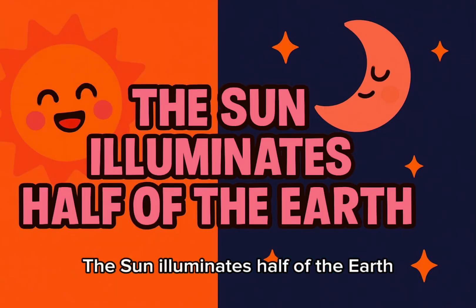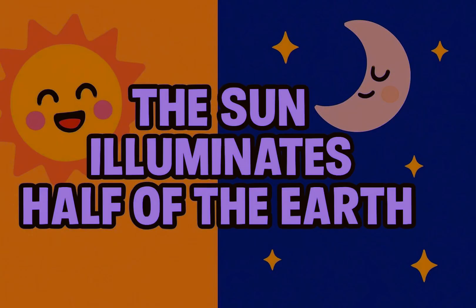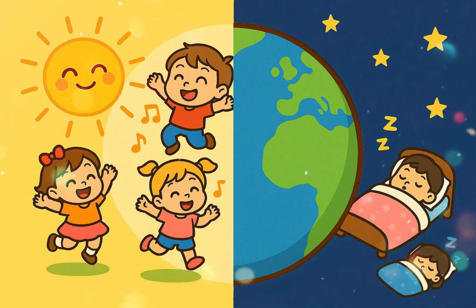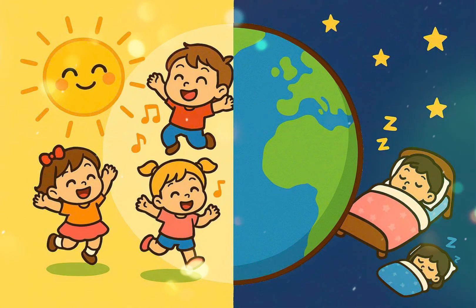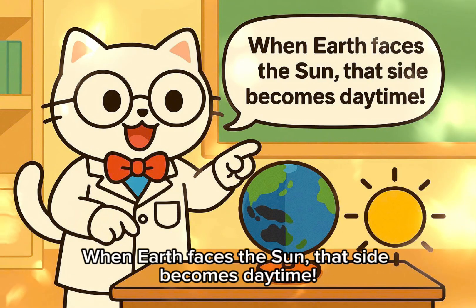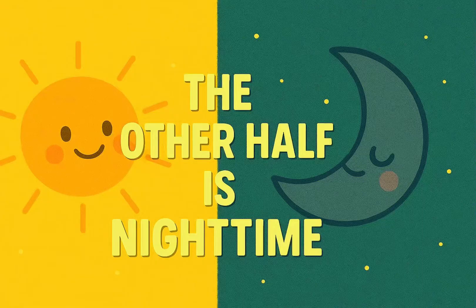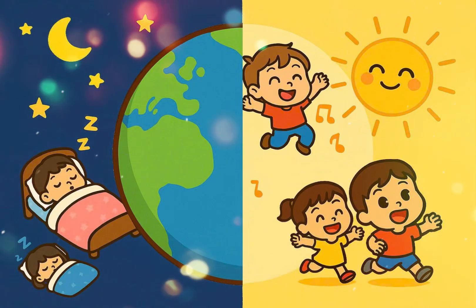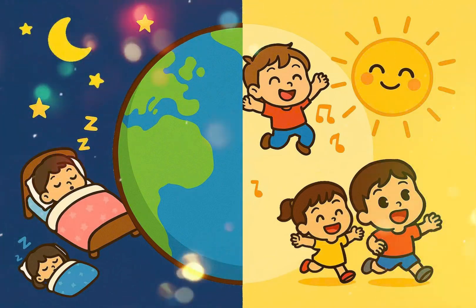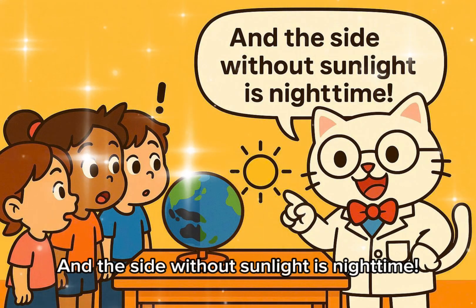The sun illuminates half of the earth. When earth faces the sun, that side becomes daytime. The other half is nighttime — the side without sunlight is nighttime.